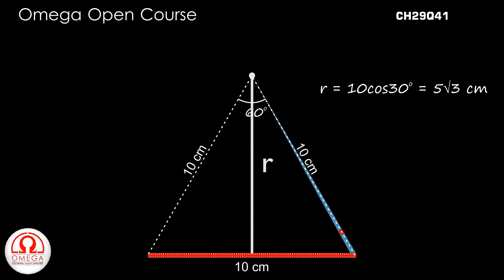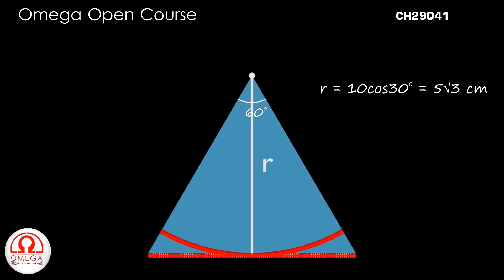As is derived in the video, the electric field at the point is given by 2k lambda sin theta by 2 divided by r, where lambda is linear charge density, i.e., charge by length.